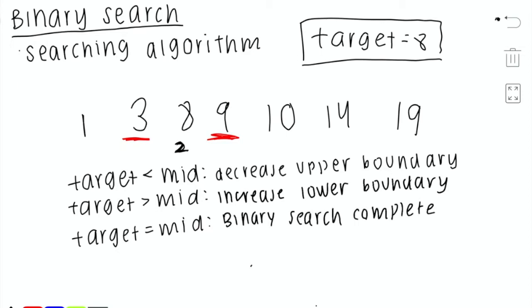The idea behind binary search is that we keep reducing our initial array in half. We continue doing this until we've found our element, or until we no longer have an array to check. With that, let's go over the code.